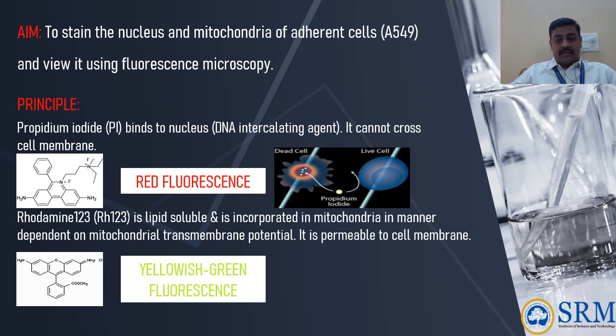The second dye, rhodamine 123, is lipid soluble and hence it can cross the cell membrane. This is incorporated in the mitochondria in a manner dependent on the mitochondrial transmembrane potential. This dye is permeable to the cell membrane and appears yellowish green in color when visualized under the microscope.